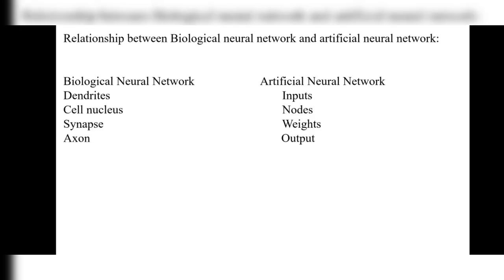Let's see the relationship between biological neural network and artificial neural network. In a biological neural network, dendrites are called inputs in the ANN. The cell nucleus is called nodes, synapse is called weights, and axon is called output in the artificial neural network.